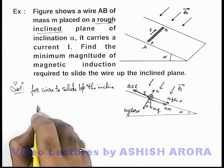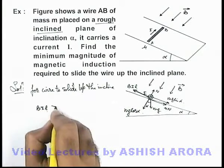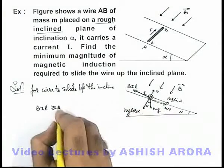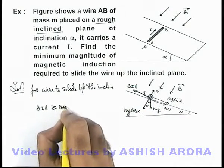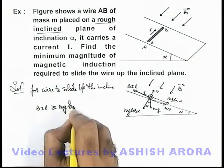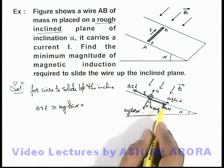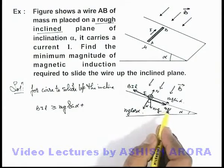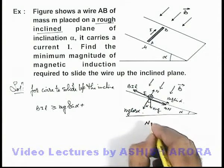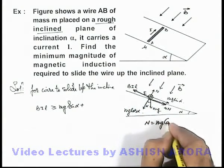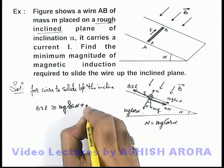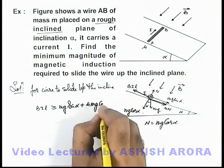Here we can write that BIL must be greater than or equal to the downward force on the wire, which has one component of gravity mg sin α plus the limiting friction force to start sliding, that is μN. The normal reaction here will be equal to mg cos α, so we write it as μ mg cos α.